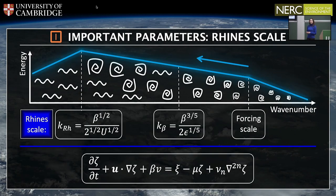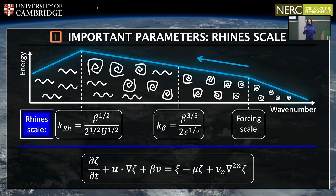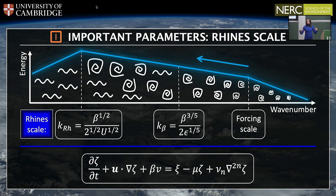Audience member: I assume that the effect you're seeing in these jets is critically dependent on having beta non-zero. If you switch off beta and have a square domain, you would see the formation of large-scale vortices. Laura: Yes, and if you change the aspect ratio of the domain, you can actually start to see jet-like behaviour — there might be an aspect ratio dependence. But certainly in square domains, it's large-scale vortices.